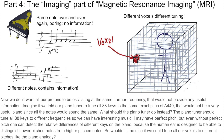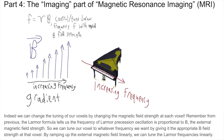So wouldn't it be nice if we could tune all our voxels to different pitches like the piano analogy? Indeed, we can change the tuning of our voxels by changing the magnetic field strength at each voxel. Remember from previous, the Larmor formula tells us the frequency of Larmor precession oscillation is proportional to B, the external magnetic field strength. So we can tune our voxel to whatever frequency we want by giving it the appropriate B field strength at that voxel's location. By ramping up the external magnetic field linearly, we can tune the Larmor frequencies linearly, kind of like a piano.